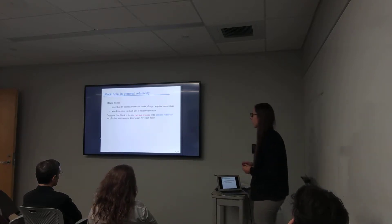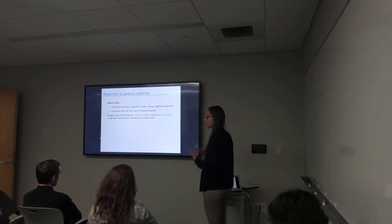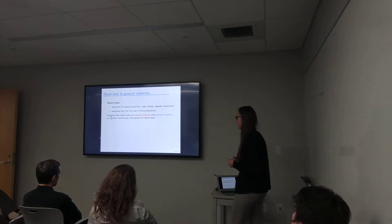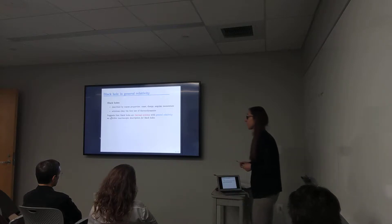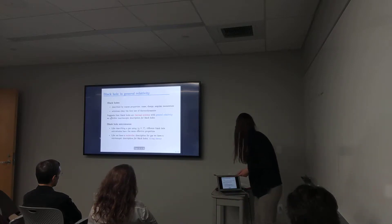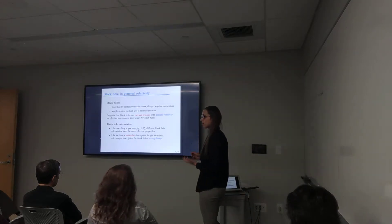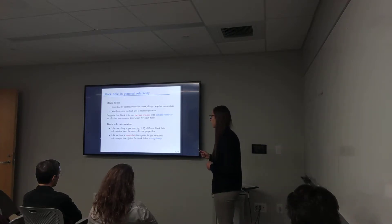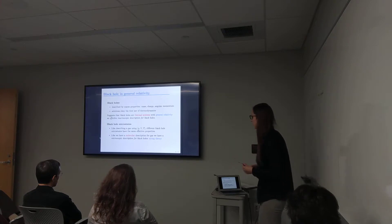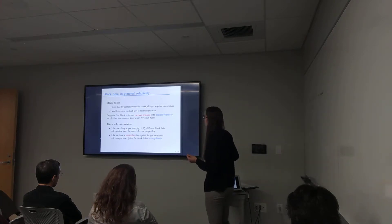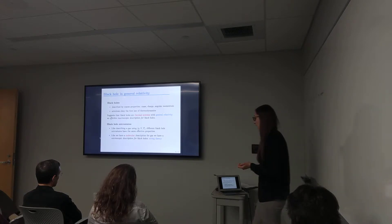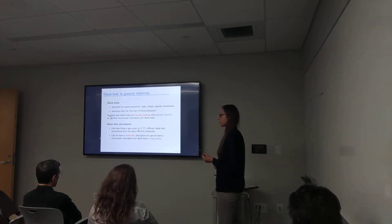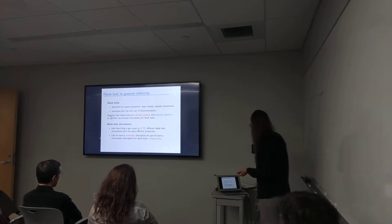I have to talk a bit about black holes as thermal systems. We know they are described by coarse properties like mass, charge, and angular momentum, obeying the first law of thermodynamics, so there's a good chance that they actually are thermal systems, and general relativity is the effective microscopic description. If you want to describe a gas described by microscopic parameters like pressure, volume, and temperature, then different microstates have the same macroscopic properties. A similar thing should be true for black holes, and like we have a molecular description for the gas in Boltzmann's sense, there's a microscopic description available for certain classes of black holes.